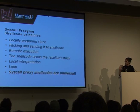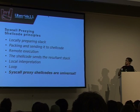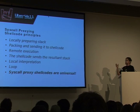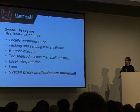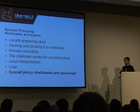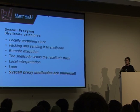More in depth: you have to locally prepare your stack - packing all the registers, the things you need to execute remotely. You send it to your shellcode, the shellcode executes it and you get the resultant stack. You do your local interpretation and you loop in that. You can execute as many syscalls as you want with the same shellcode. That's really a universal interface to Unix systems - you just have to write your code locally with as many syscalls as you want: read, write, what you want. My test shellcodes are around 150 bytes, so that's usable for a lot of exploits.